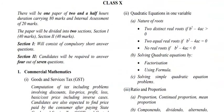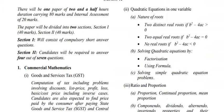Coming to quadratic equations in one variable: you will study the nature of roots — two distinct real roots. When B² − 4AC (the discriminant of the quadratic equation) is greater than 0, equal to 0, or less than 0, you solve problems related to these cases. You will also study solving quadratic equations by factorization and by using the formula method. Only these two methods are included, along with simple statement-based quadratic equation problems.